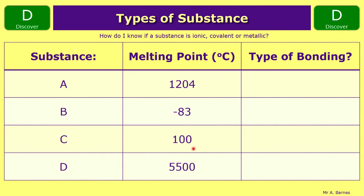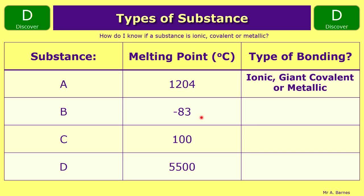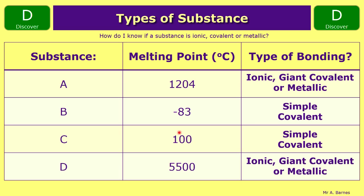For example, if we have four substances with different melting points: substance A has 1204°C, so it is not simple covalent — it's either ionic, giant covalent or metallic. B has −83°C; anything below zero you can definitely say is simple covalent. C is around 100°C, which is relatively low, so that's simple covalent too. D has a high melting point, so we can't say whether it's ionic, giant covalent or metallic, but we know it's one of those three.